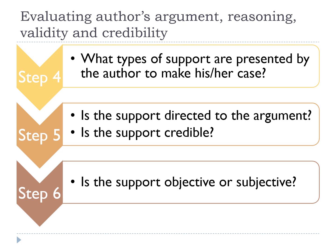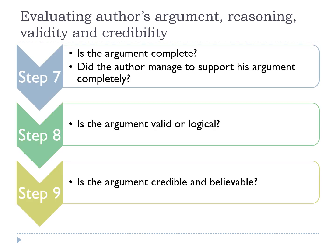Step five asks: is the support directed to the argument? Is it credible? If data is taken from research, you must find out the validity and credibility of both the data and the research. Is the support objective — meaning measurable with data and proof — or subjective, meaning based on personal opinions, thoughts, or beliefs? Finally, is the argument complete? Did the author fully support it? Is the argument valid, logical, and credible?